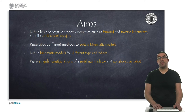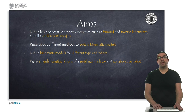I will mention different methods for obtaining kinematic models that we will explain in specific videos. Here I only intend to show you how kinematic models should look like for different robot types, without going into the details of all the maths behind. In addition to this, I will also talk about singular robot configurations, specifically the ones of serial manipulators and collaborative robots.